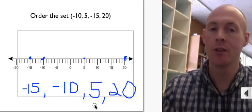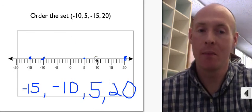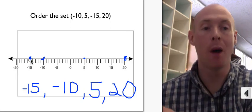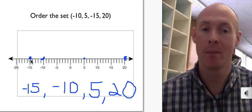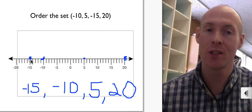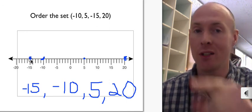Excellent. So when you're ordering your set, first plot the numbers on the number line, and then look which numbers are the further left. Those are the smaller numbers. The numbers to the far right, those are the larger numbers. So this will conclude our integers and ordering and comparing integers. And we'll see you next time.